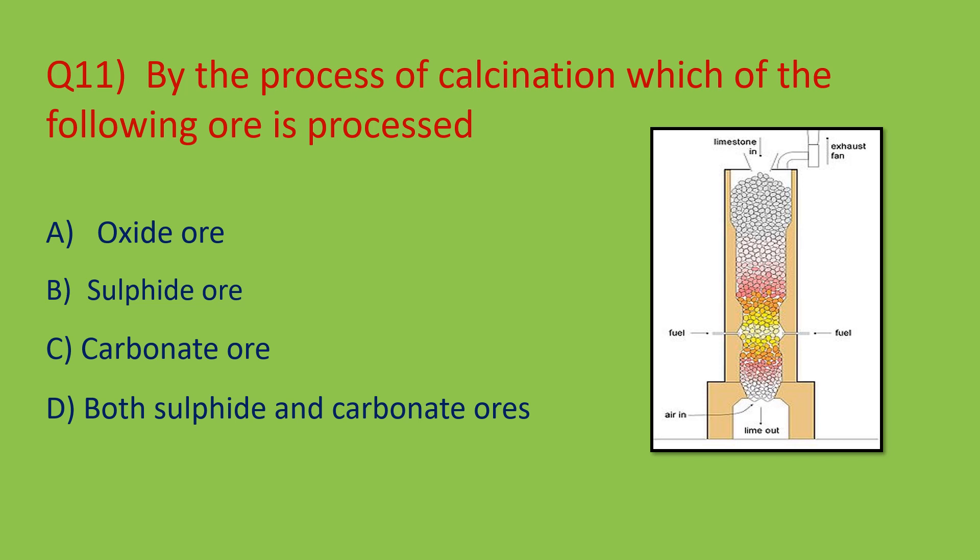Question number eleven: by the process of calcination, which of the following ores is processed? Calcination means heating a carbonate ore in the absence of or in shortage of oxygen. In rural India, limestone is heated to get quicklime — that is calcination. Out of the four options, option C — the carbonate ore — is the right answer.